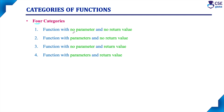The first category is function with no parameter and no return value — the calling function does not pass any parameter and the called function does not return any value. The second category is function with parameters — the calling function passes a parameter but the called function does not return any value. The third category is where no parameter is passed but the called function returns a value. The fourth category is where the calling function passes a parameter and the called function also returns a value.